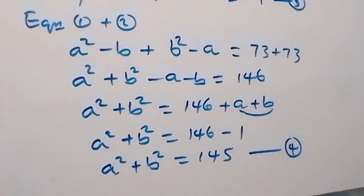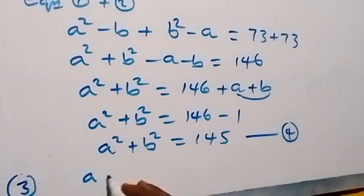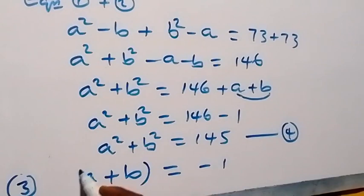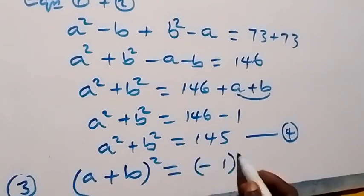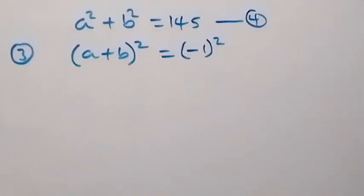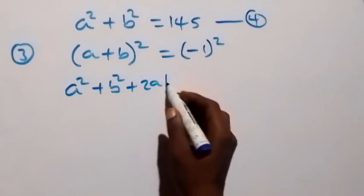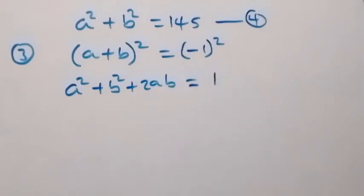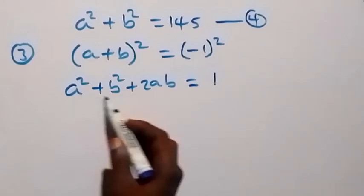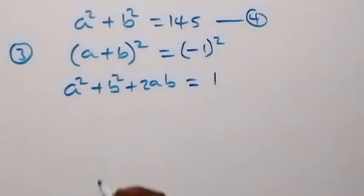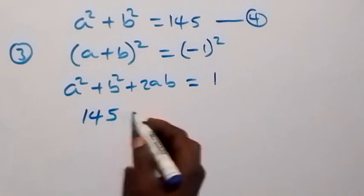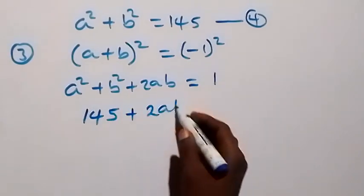Let's bring back equation 3. From equation 3, we have a plus b equals minus 1. Let's square both sides. The expansion gives us a squared plus b squared plus 2ab equals minus 1 squared, which is 1. We have a squared plus b squared to be 145 from equation 4, so that can be substituted as 145. Then plus 2ab equals 1.